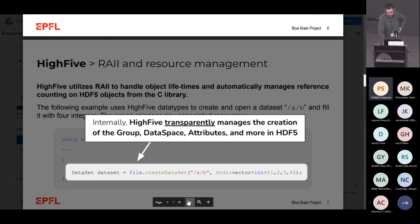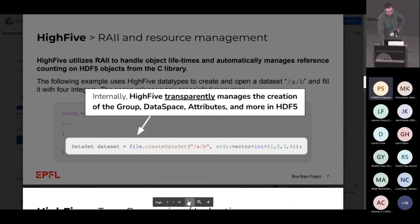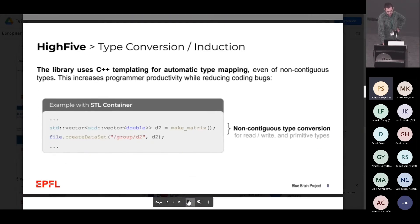You give a vector of data, and magically in those lines it is creating the group, the dataspace, attributes — everything you want. You don't manage the lifetime yourself; it's already done. The other thing we give to C++ users is converter and type deduction. You can give types like boost matrix, eigenvector, or tensor. Even if it's non-contiguous, like vector of vector, we handle that directly. We write it at the end into the HDF5 file.